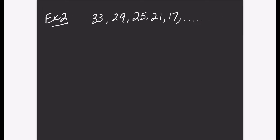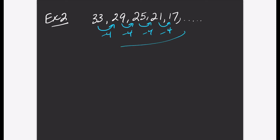Let me show you example number 2. Let's first identify if it is an arithmetic sequence. The first term is 33, the second term is 29, and so forth. To get from 33 to 29 you subtract 4, from 29 to 25 you subtract 4, from 25 to 21 you subtract 4, and from 21 to 17 you subtract 4. Since the pattern is the same, we have a common difference of negative 4. This is arithmetic because you subtract by the same number every single time.